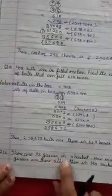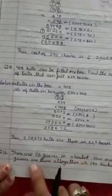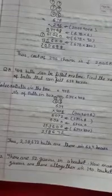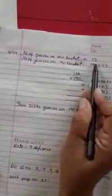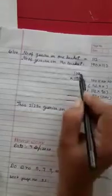Now, question number 12. There are 112 guavas in a basket. How many guavas are there altogether in 190 baskets? That means, 112 guavas are in one basket, so how many guavas are in 190 baskets? Number of guavas in one basket is 112. Number of guavas in 190 baskets, we will multiply. 112 multiply by 190.